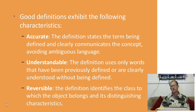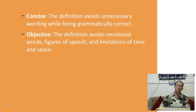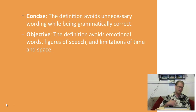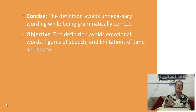Make sure a definition is reversible — it identifies the class to which the object belongs and its distinguishing characteristics, so you can bridge the concept from object to object. It should also be concise. You don't want long definitions. If you look up a word in Webster's Dictionary, the definition is never pages long. If you have to take 75 words to define something, you've done a bad job. And it should be objective — not subjective. We don't want judgmental words, emotional words, or things that are only true for the speaker.